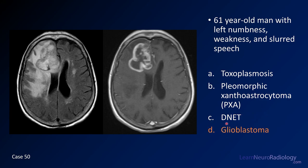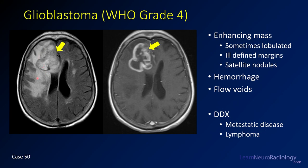This is a classic case of glioblastoma. What you have is a frontal lobe mass with a lot of edema and white matter abnormality extending through the genu of the corpus callosum. On post-contrast, there's peripheral enhancement with central necrosis — classic appearance of a GBM. You can have hemorrhage and flow voids associated with these. The differential is metastatic disease or lymphoma; if you see more white matter infiltration, think GBM. Lymphomas tend to be more solidly enhancing, particularly in immunocompetent patients.